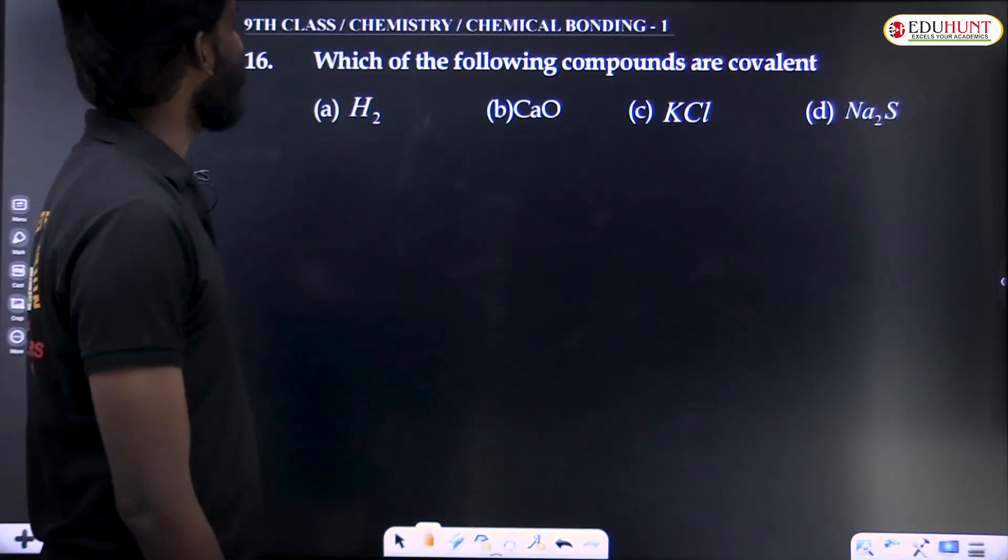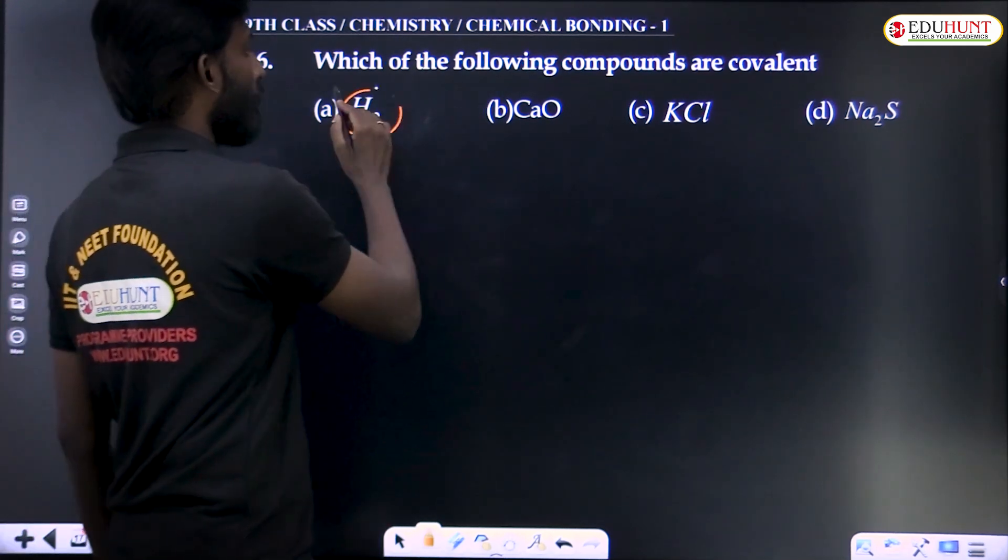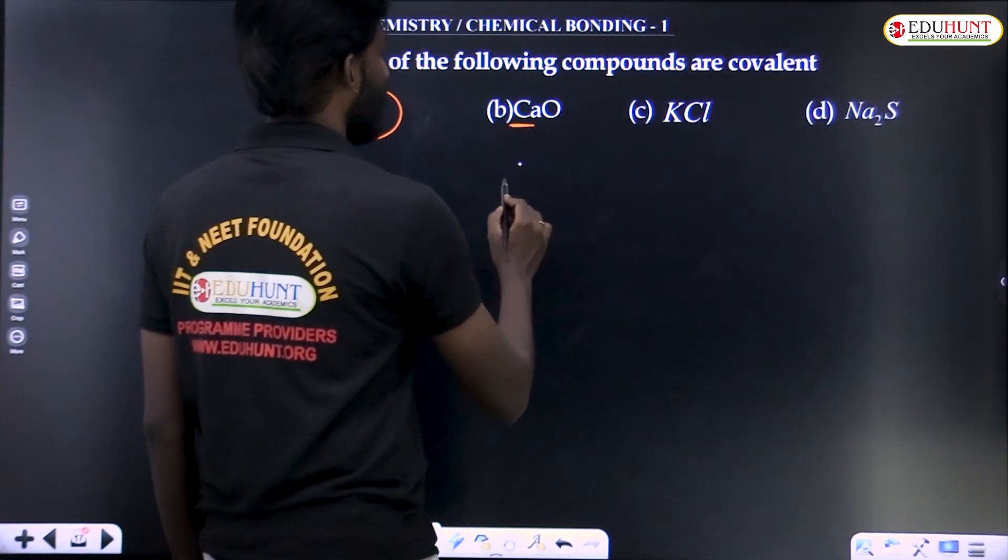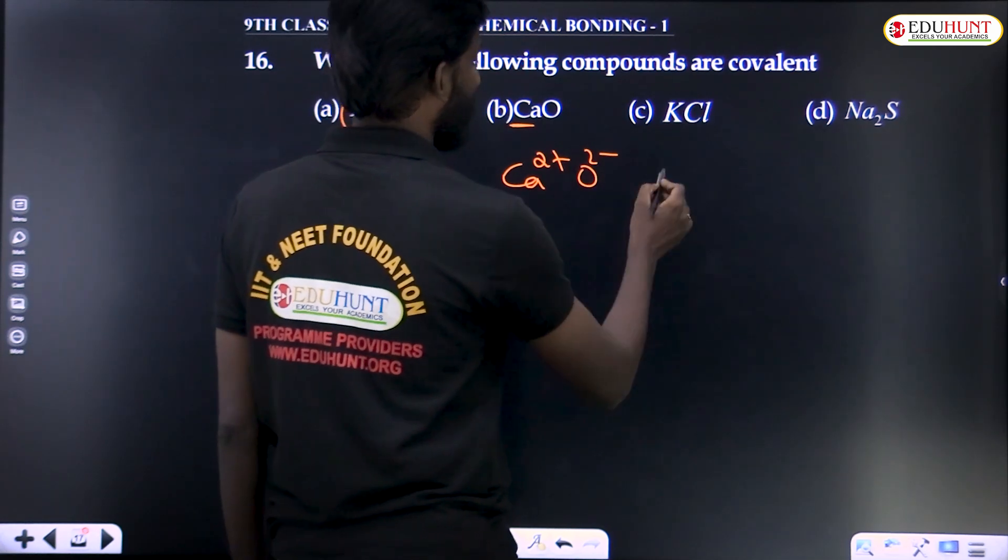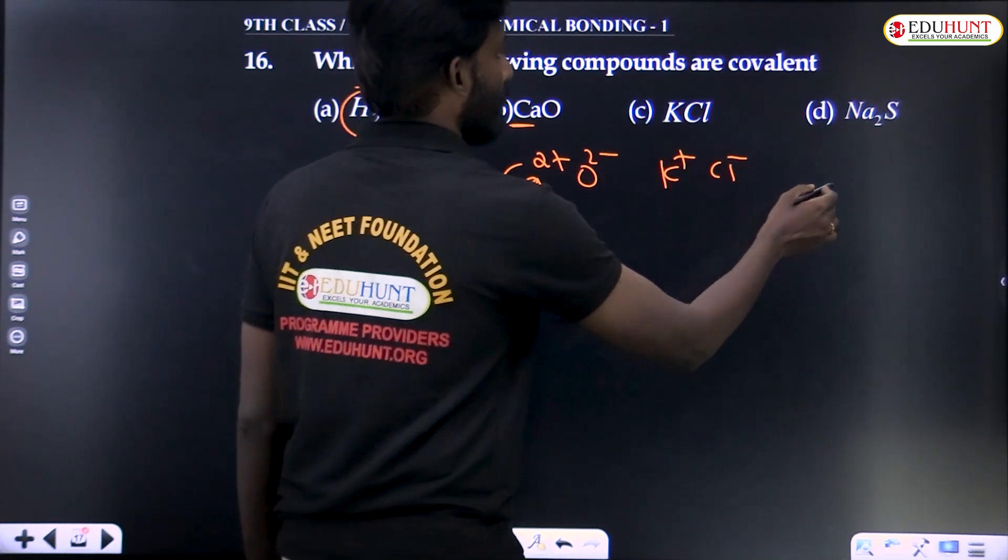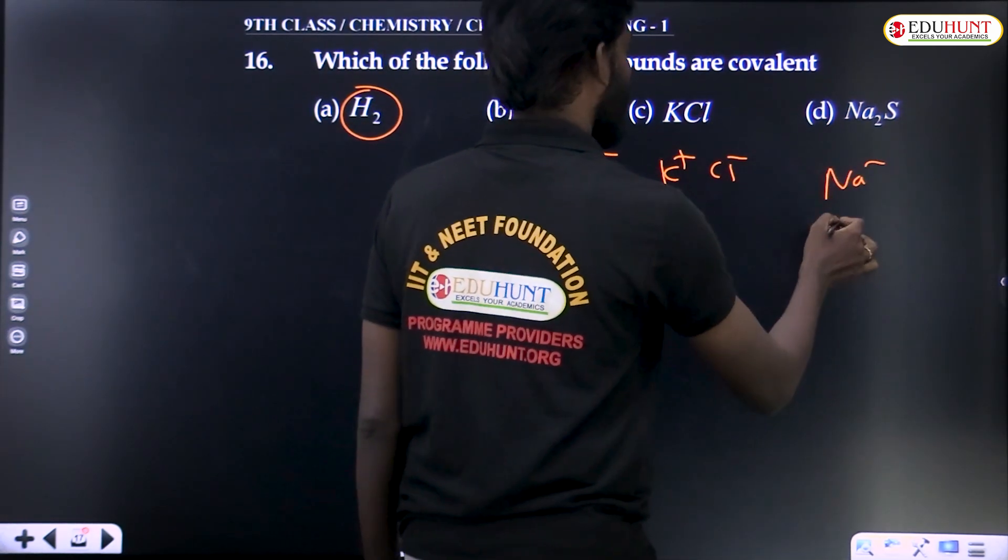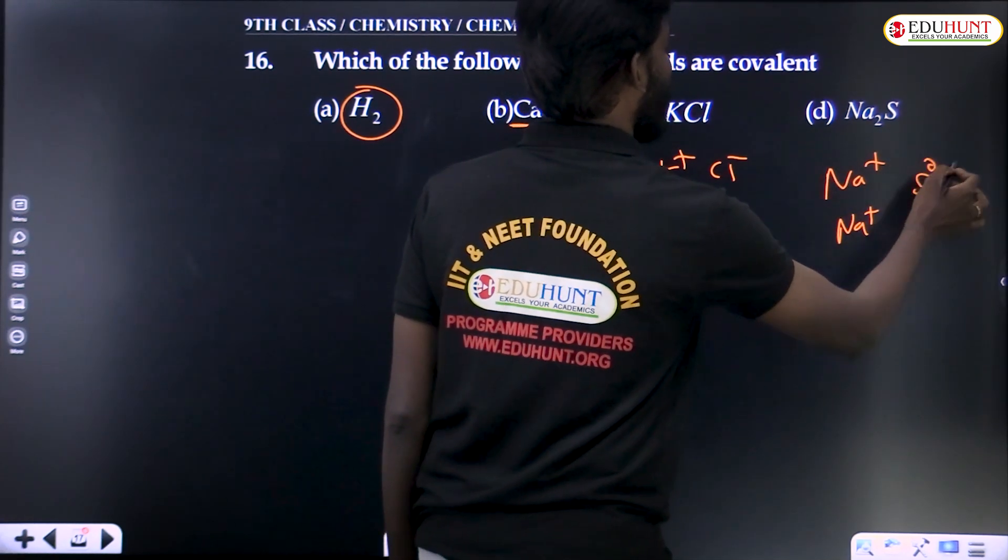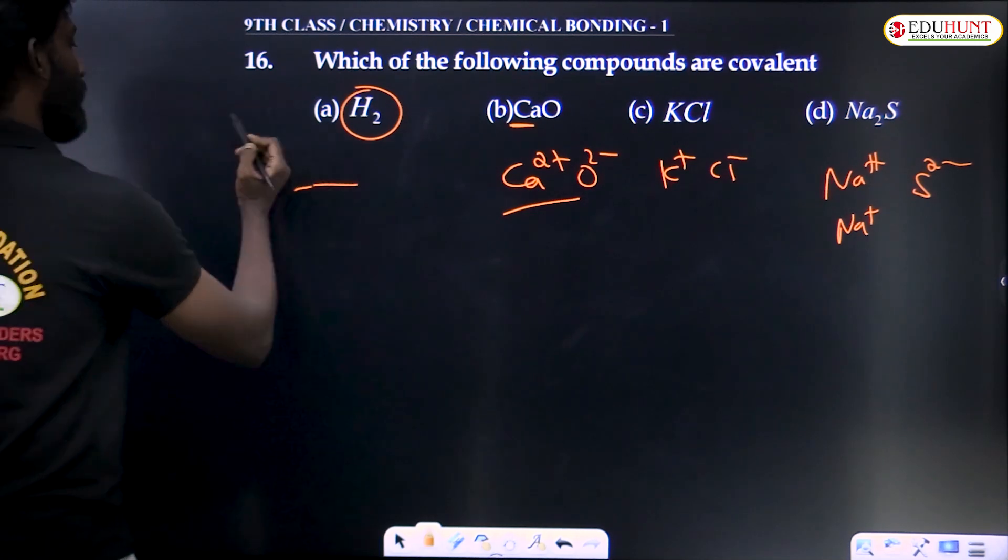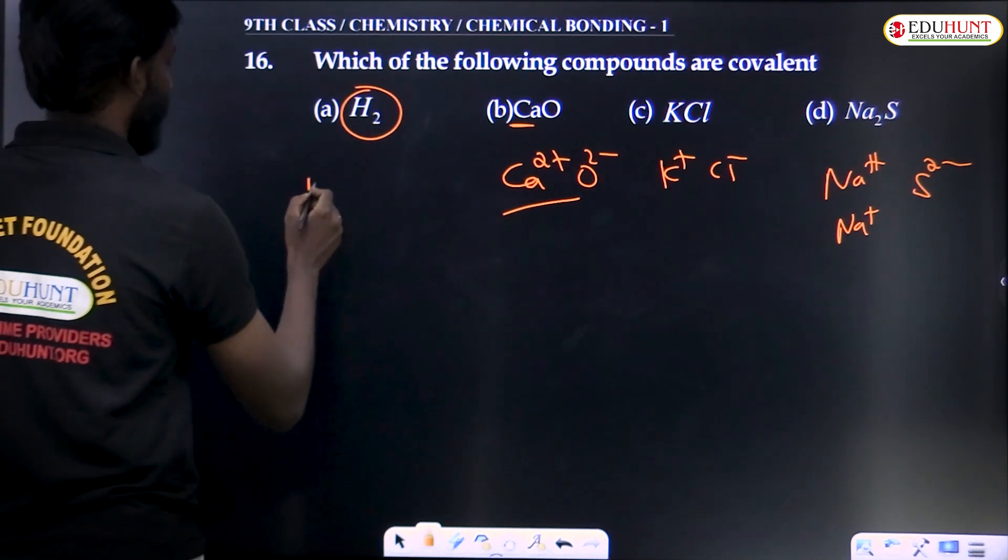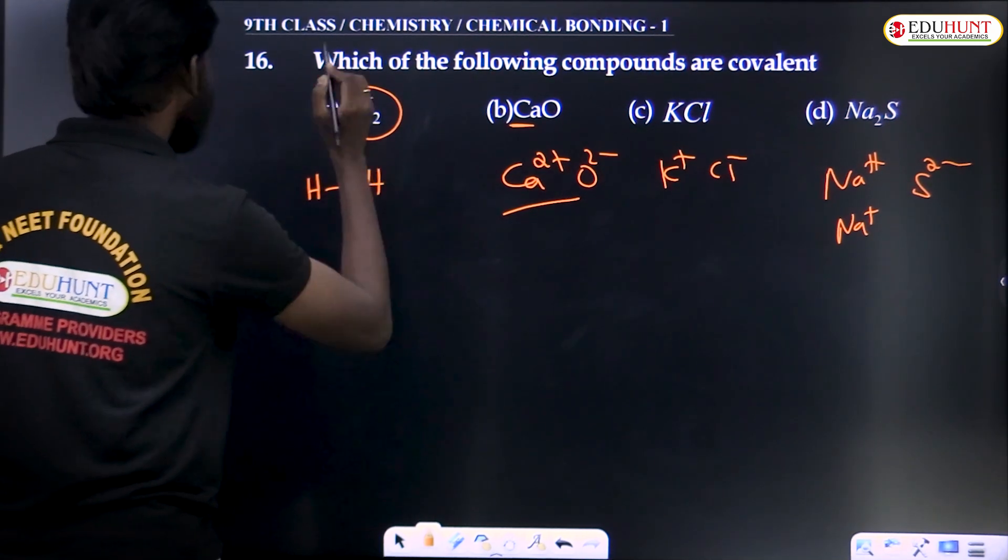Which of the following compounds are covalent? Hydrogen is covalent. This is calcium, Ca2+ O2- ionic. This is K+ Cl- ionic. This is Na+, S2- ionic. Hydrogen, hydrogen - single bond, covalent.